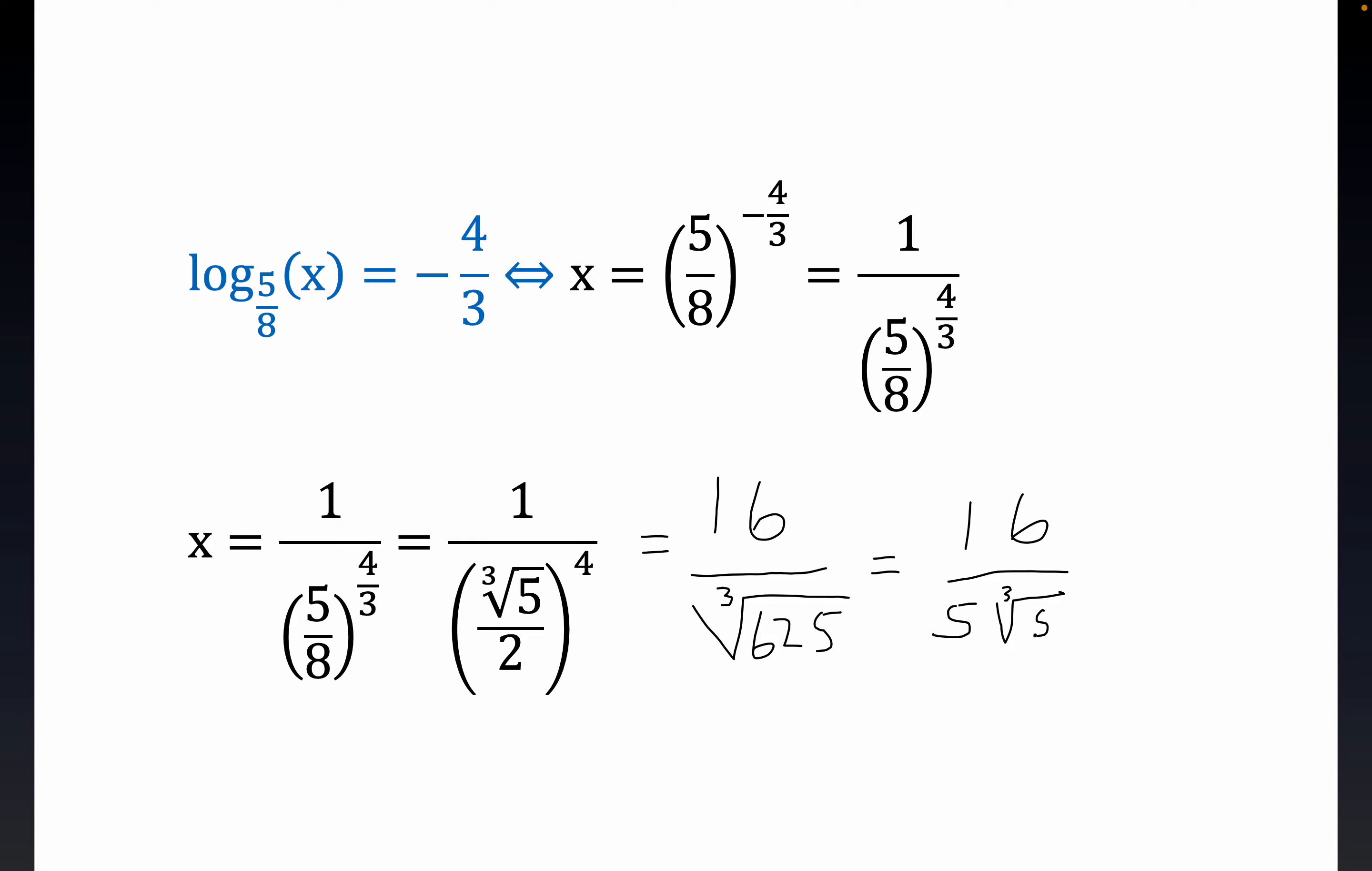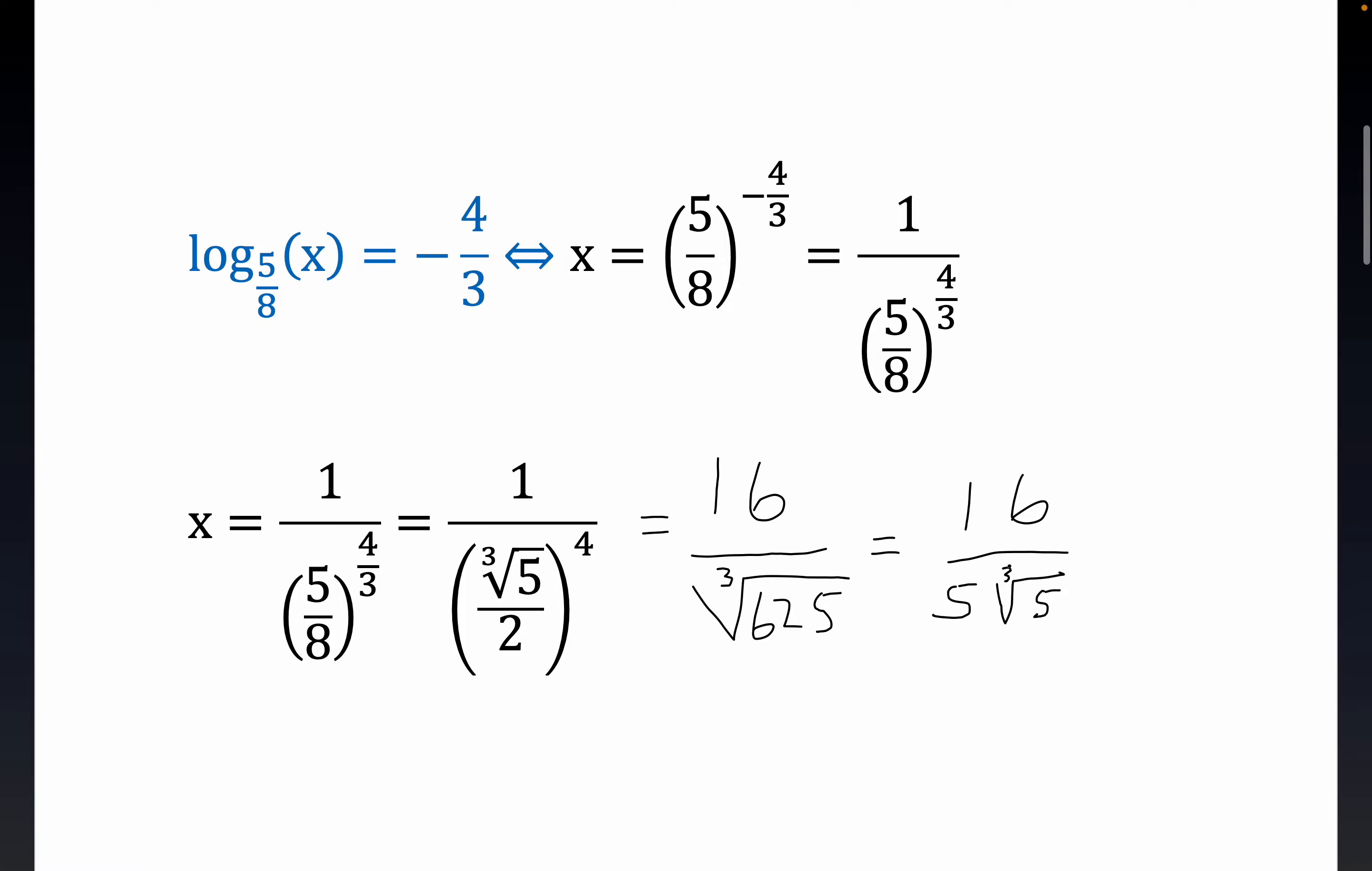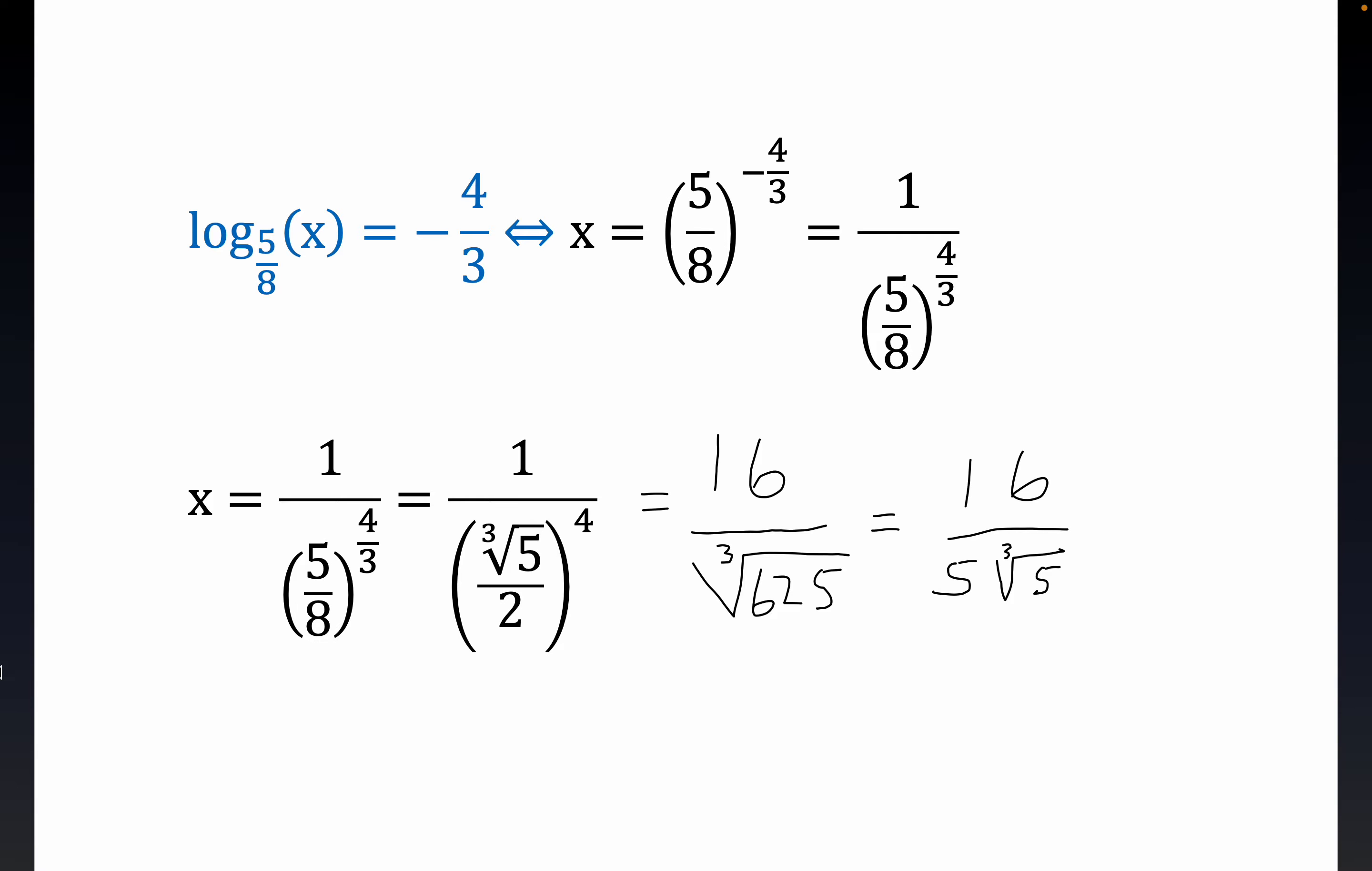Cube root of 5. Now, we're still in this position here. We have 16 over 5, which is larger than 3, but we're multiplying the denominator by a number bigger than 1, so we might expect this to be a number between 2 and 3, but let's see what else we can do with this.